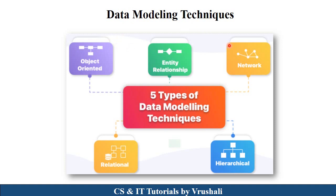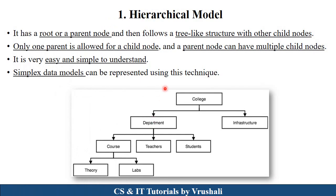The next point is data modeling techniques. There are different ways to visualize and represent data. There are a total of five data modeling techniques: object oriented, entity relationship, network, hierarchical, and relational. The first technique is the hierarchical model, which shows tree structure information. For example, college has department and infrastructure; department has course, teacher, student; course has theory and lab. It shows tree structure information — there is only one parent node, and this parent node has multiple children. It is very easy and simple to understand and can be used in simple data models, not complex ones.